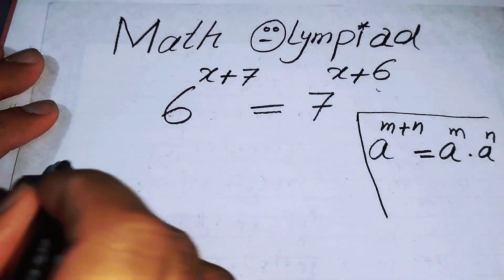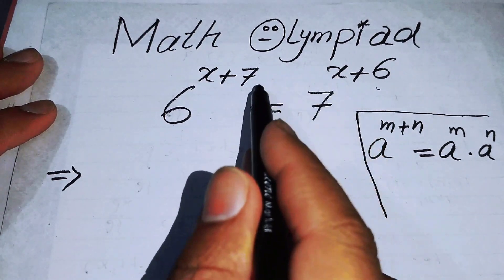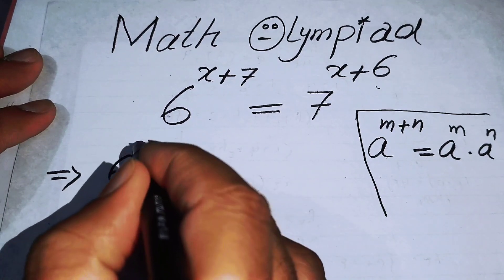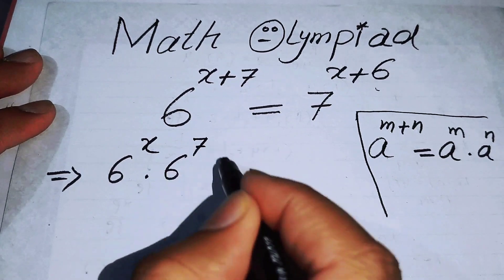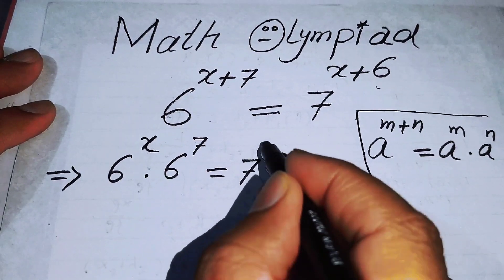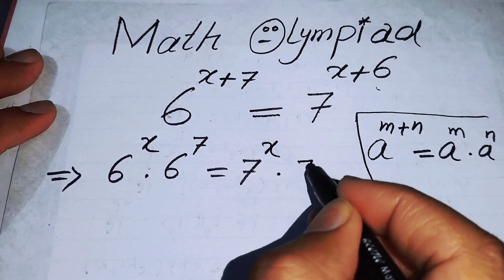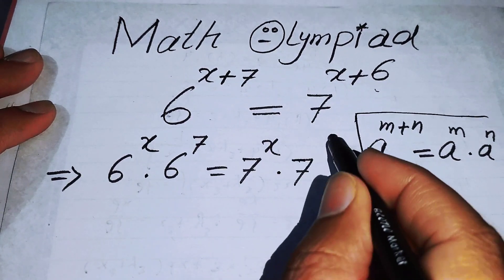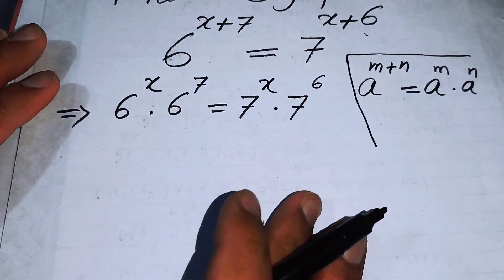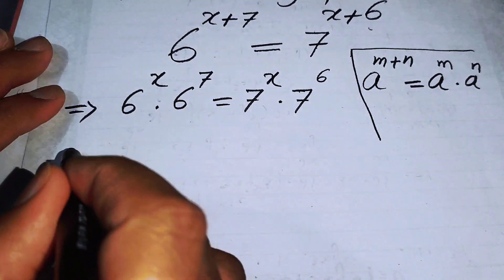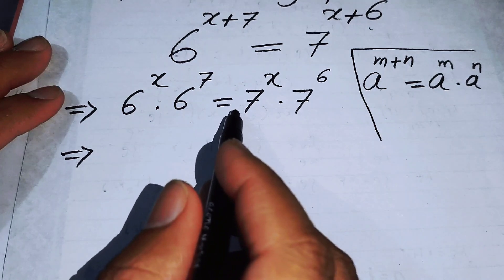We will break both of the exponents and write it as 6 to the power of x times 6 to the power of 7, equals 7 to the power of x times 7 to the power of 6.